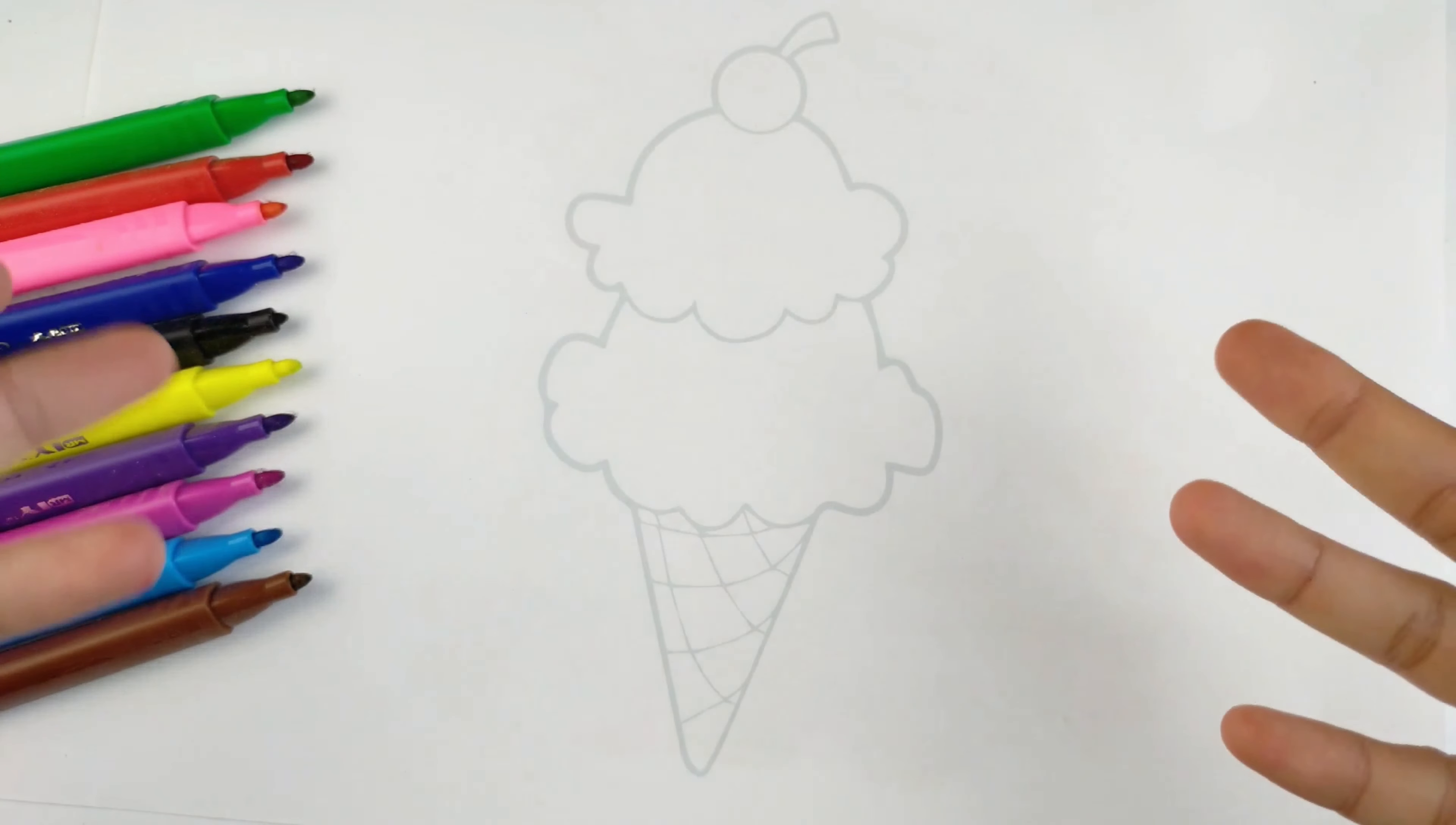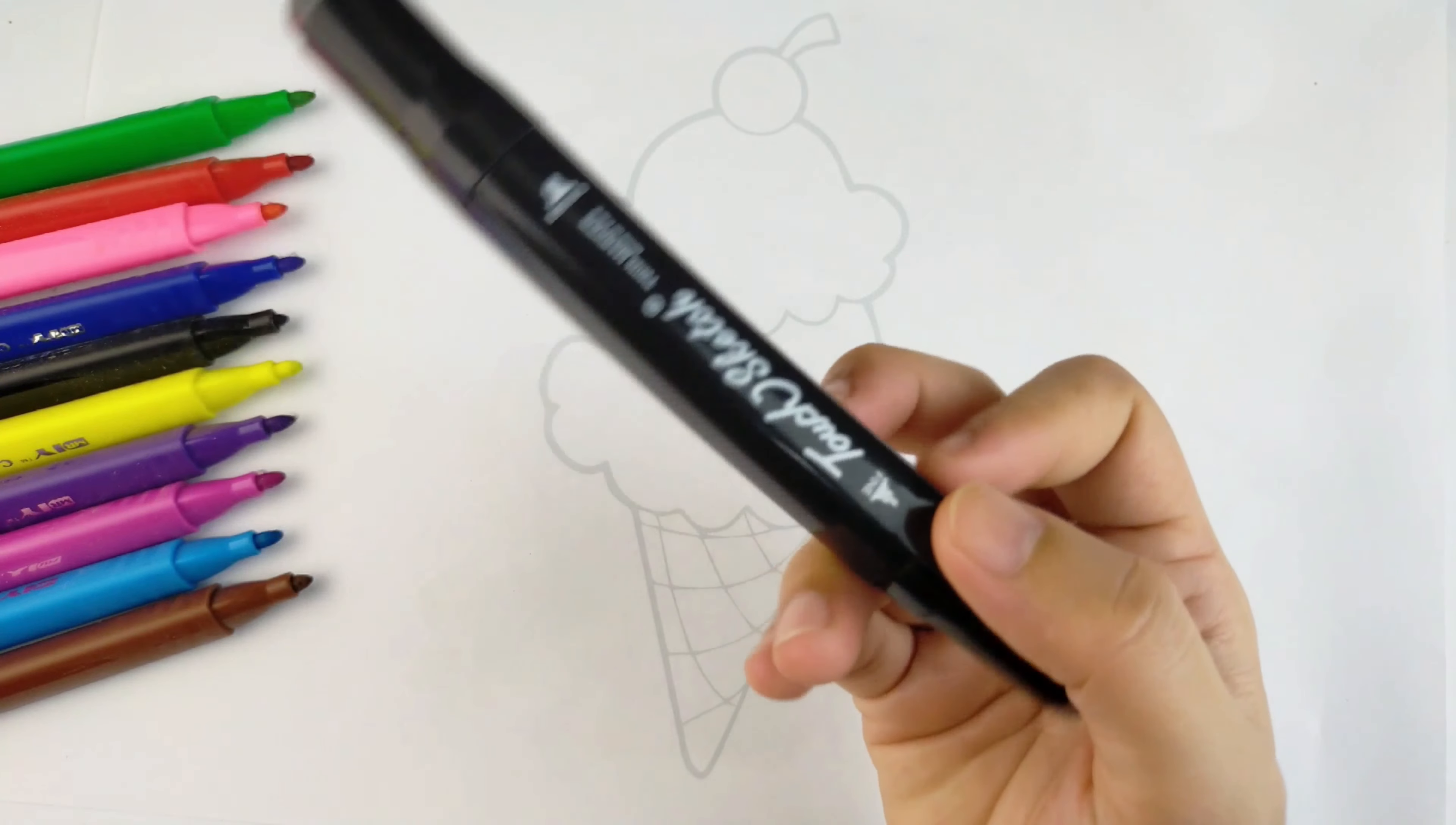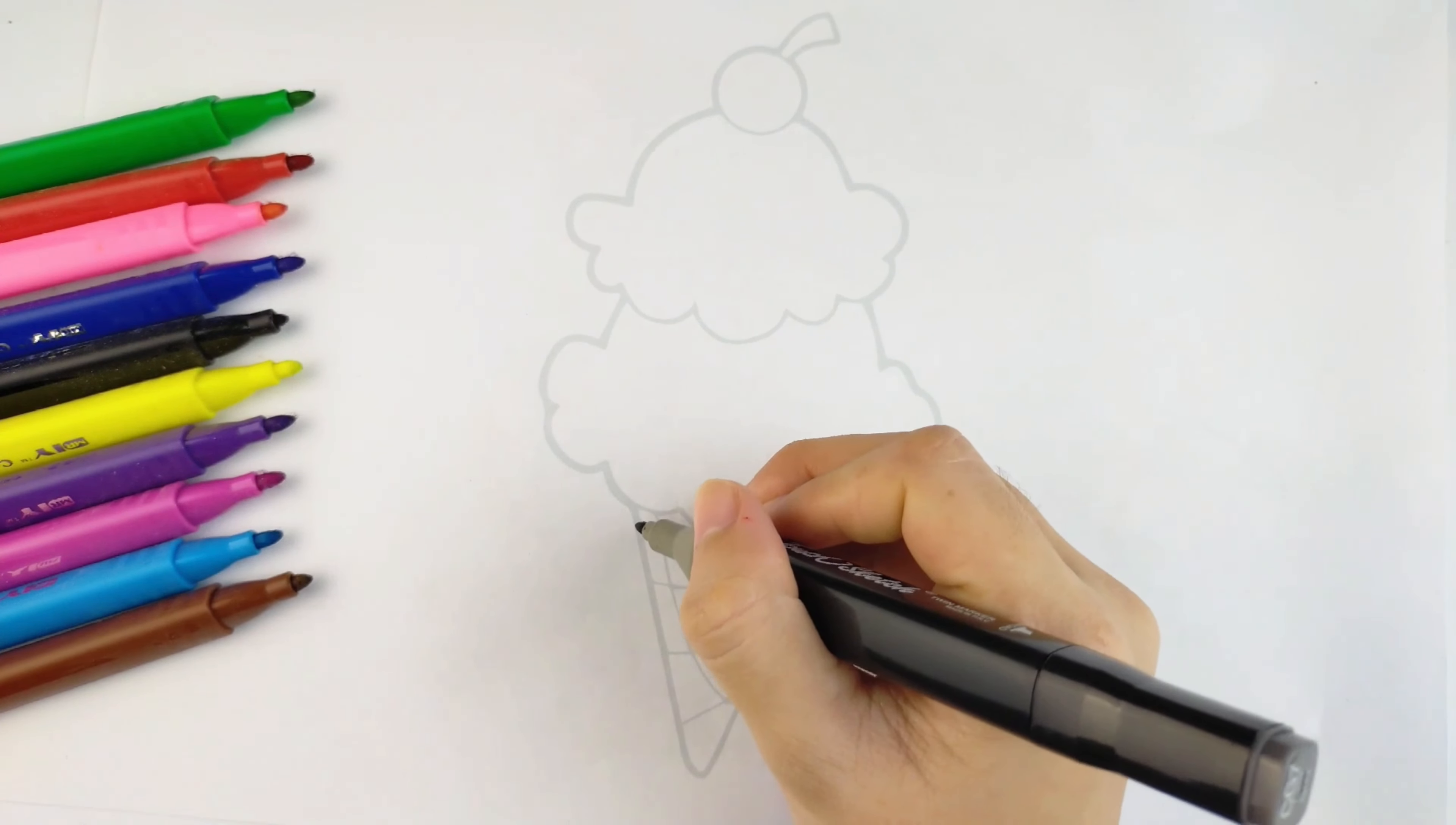Today I will draw and color ice cream. Do you like ice cream? The first thing we have to do is thicken the gray line with a black marker.